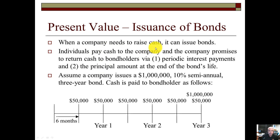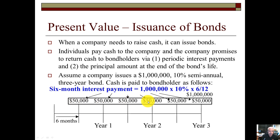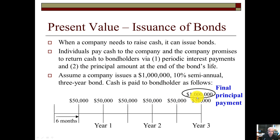When a company needs cash, it can issue bonds. Individuals pay cash to the company, and the company promises to return cash to the bondholders via periodic interest payments and the principal amount at the end of the bond's life. Let's assume the company issues a $1,000,000, 10%, semi-annual, three-year bond. The company is going to pay to the bondholder $50,000 every interest payment period. The six-month interest payment is calculated as principal times rate times time — a million times 10% times six over twelve, since it's semi-annual. This amount does not change. Finally, the company will pay the million dollar face value back to the investor at the end of the bond's life.